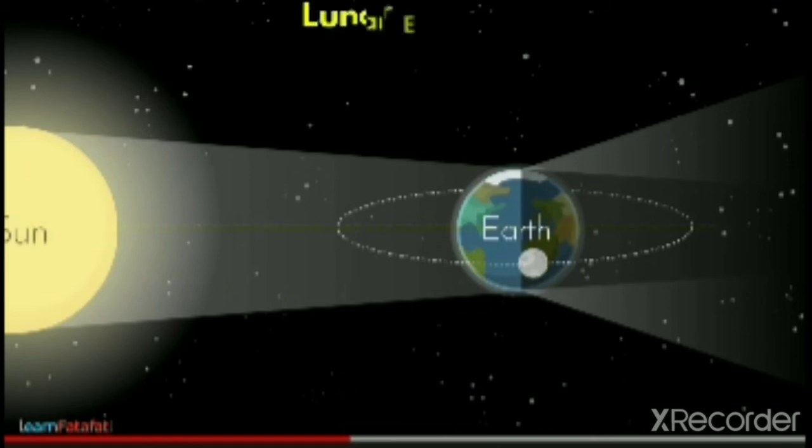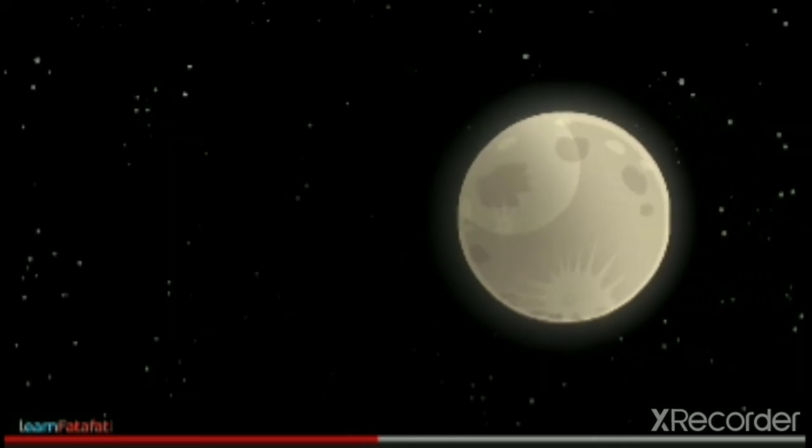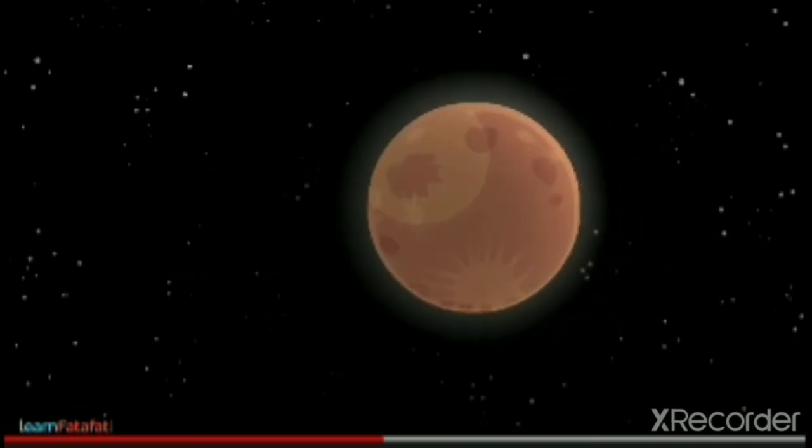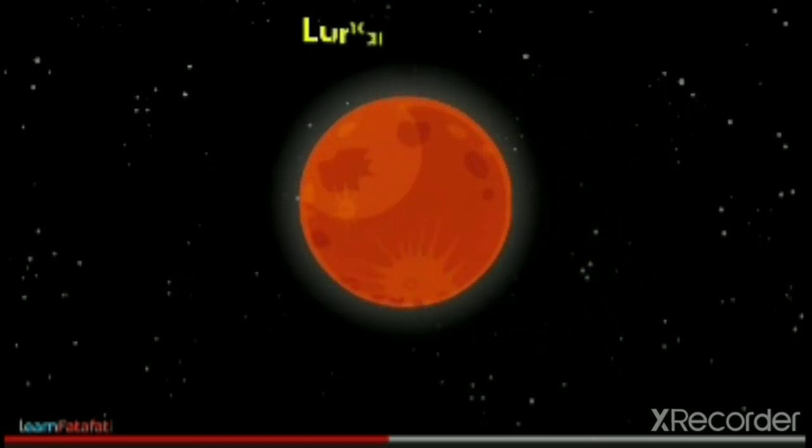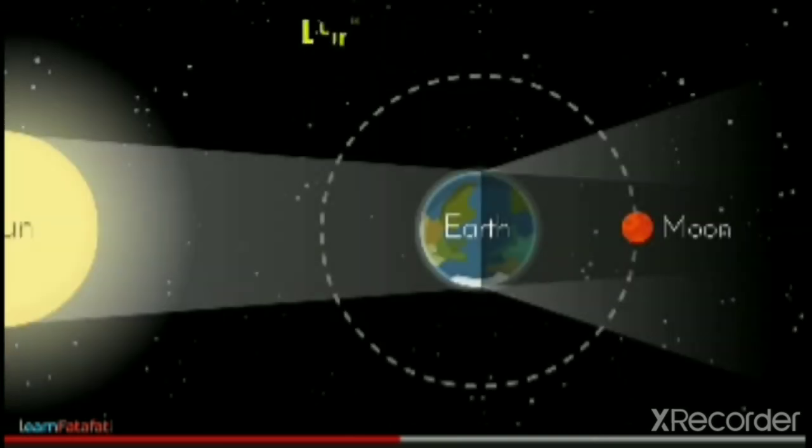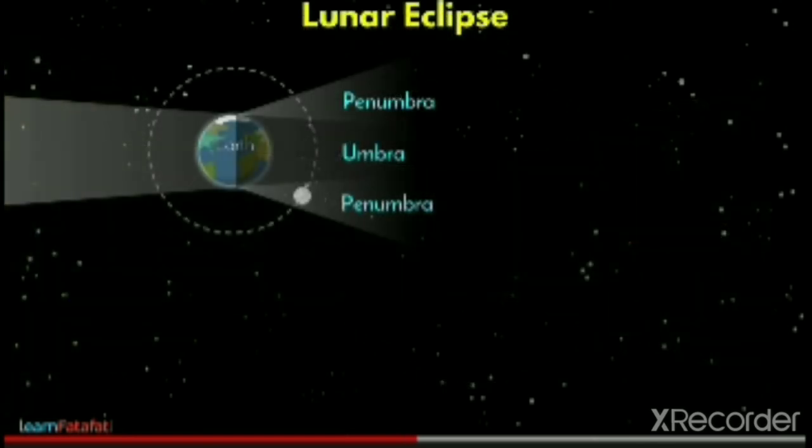Now let us see what a lunar eclipse is. In a lunar eclipse, again the sun, moon, and Earth come in one single straight line. The Earth is in between the sun and the moon and blocks the light that falls on the moon. The shadow of the Earth falls on the moon and we get a lunar eclipse.